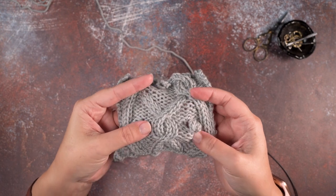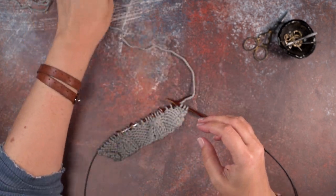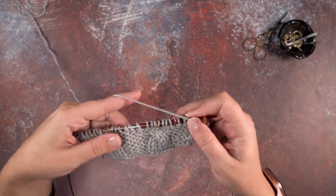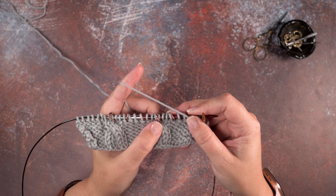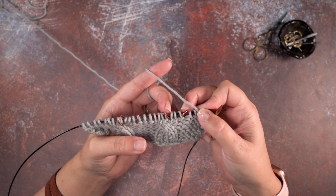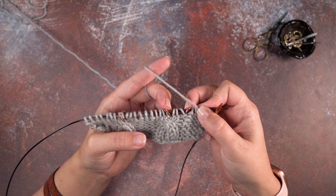I'm going to show you how to create that cable but we're going to do so without using a cable needle. I have my work here and as you can see I've got that cable started and I've placed some stitch markers on both sides of where we're going to be placing our three stitch cable.